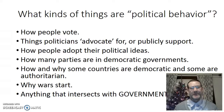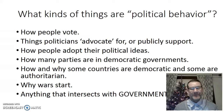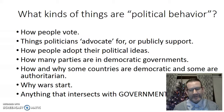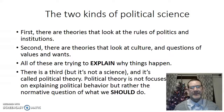What kinds of things count as political behavior? How people vote, things politicians advocate for or publicly support — why do some politicians support fracking and why are some anti-fracking? How people adopt their political ideas, how many parties are in democratic governments, how and why some countries are democratic and some are authoritarian, and why do wars start. These are all important questions in political science. Anything that intersects with government can be political behavior.